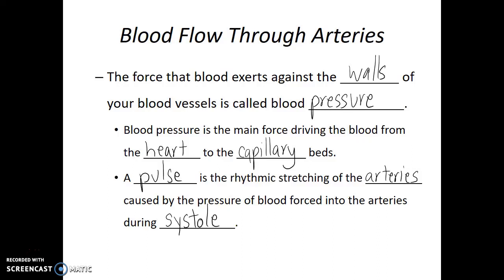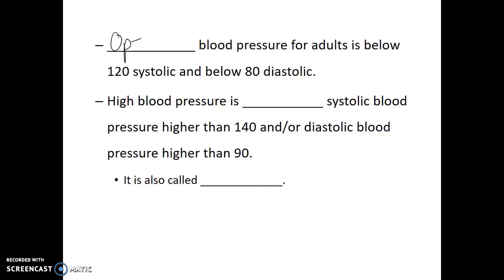Systole is the contraction phase of the cardiac cycle. Optimal blood pressure for adult humans is below 120 systolic and below 80 diastolic. Blood pressure is typically given as two measurements, a systolic pressure and a diastolic pressure. The systolic pressure is always going to be higher because that's the force of the blood on the walls of the arteries right as the heart is beating. The diastolic pressure is the residual pressure on the walls of the arteries even when the heart is in its relaxing state.